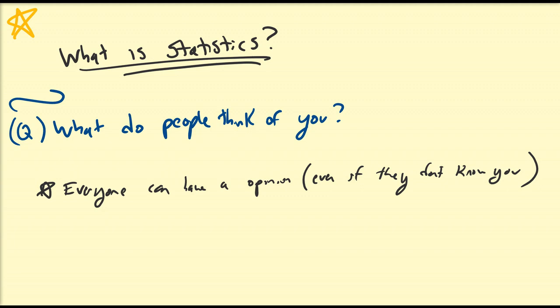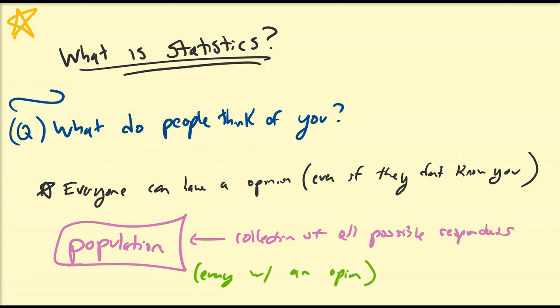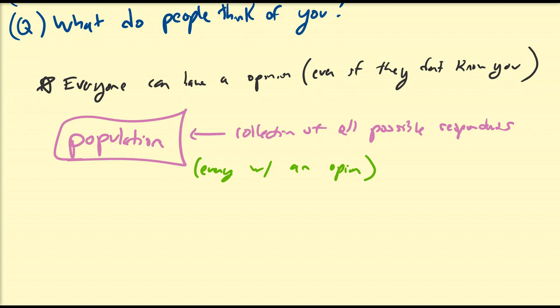The first main set that you should understand is what we call the population. The population, in this case, is the collection of all possible respondents, in this case, everyone with an opinion.